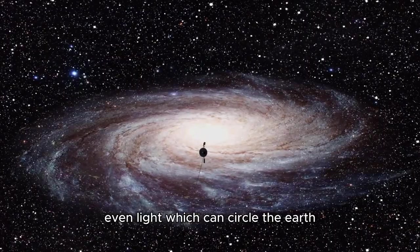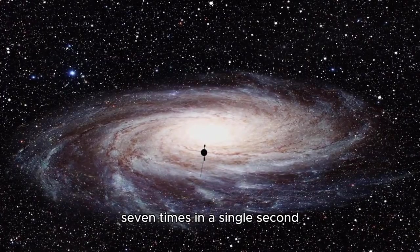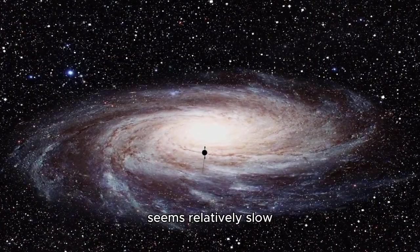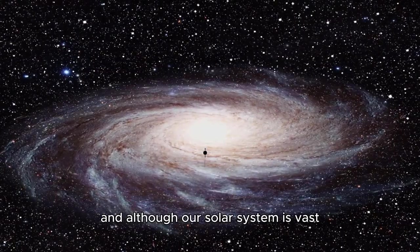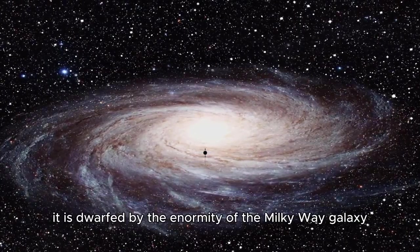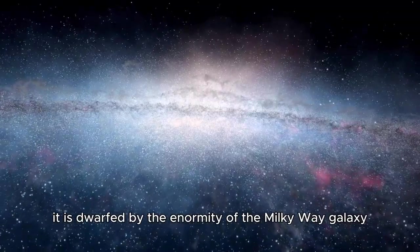Even light, which can circle the Earth seven times in a single second, seems relatively slow compared to the vastness of our solar system. And although our solar system is vast, it is dwarfed by the enormity of the Milky Way galaxy.